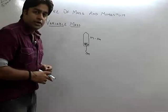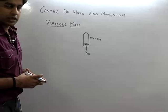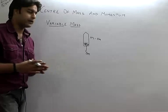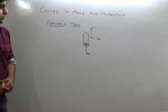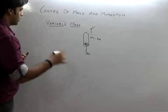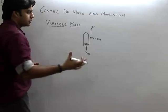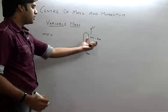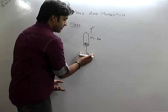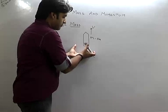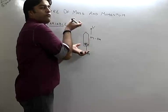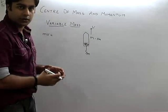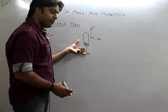Due to conservation of linear momentum — and we assume gravity is zero — if we observe momentum: initially the rocket had velocity V and mass M, so initial momentum was M times V. Finally, mass is reduced as gases exit downward, so the rocket moves upward. Since there is no external force, momentum must be conserved.